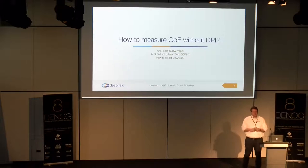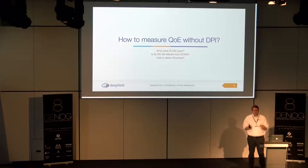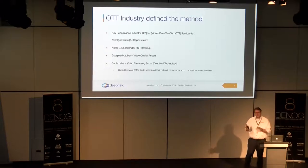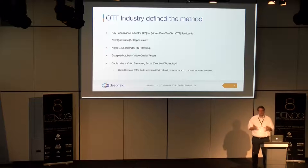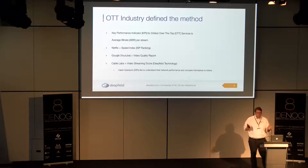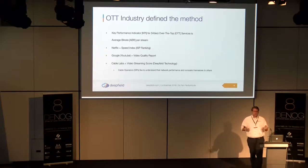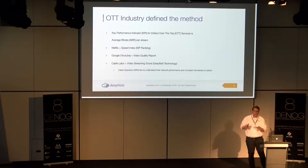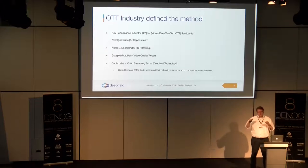So we have a different approach. First of all, how to measure quality of experience without DPI. The industry has already defined methods to measure video quality. One company doing that is Netflix, which publishes their results — it's called the Netflix ISP Speed Index or ISP Ranking. YouTube does that as well, currently not in Germany but in many other regions; it's called the Video Quality Report. Another initiative is Cable Apps, which is mainly based on Deepfield technology, to measure QoE and compare different ISPs — in this case cable operators — against each other.